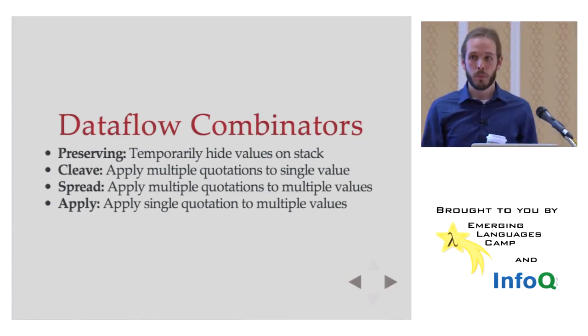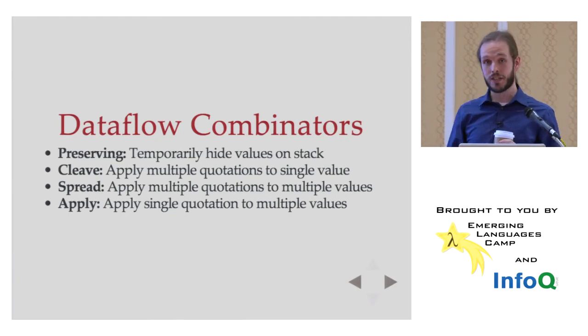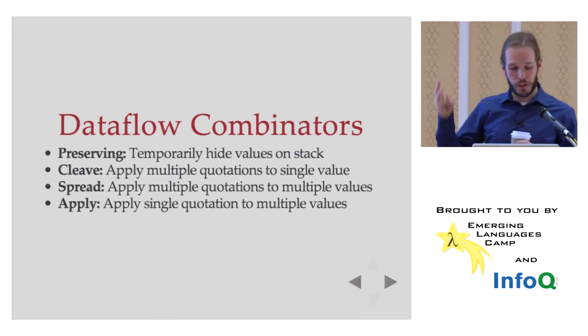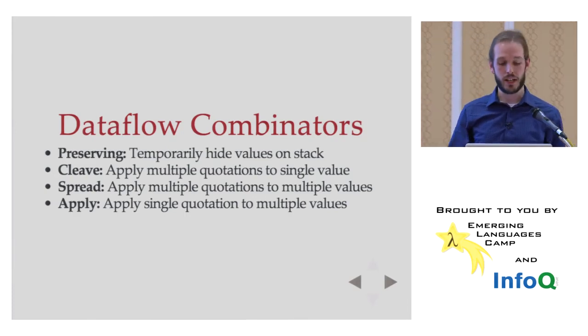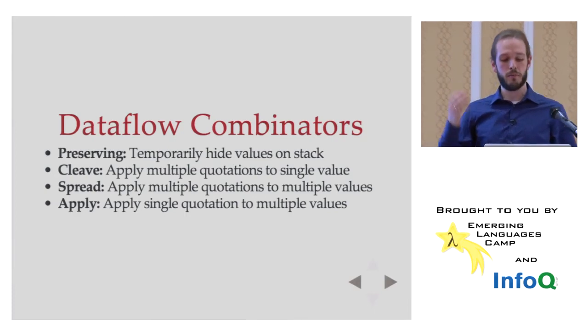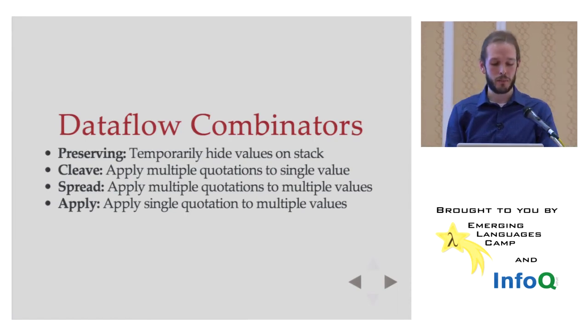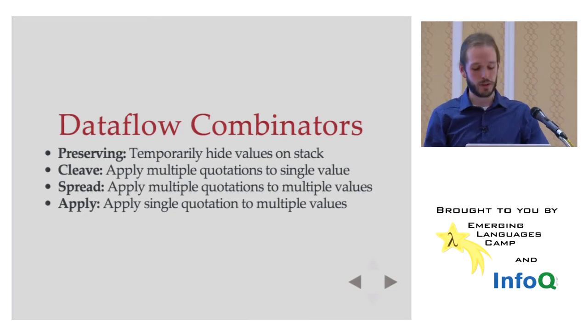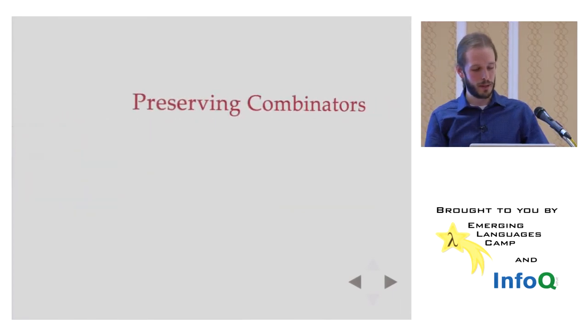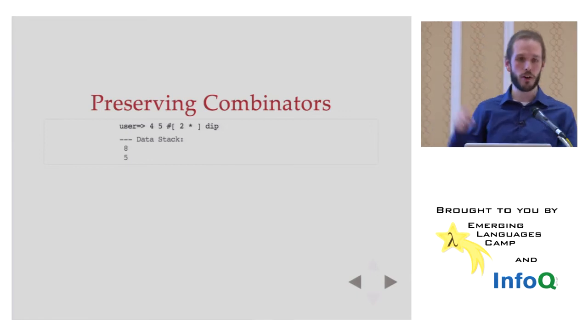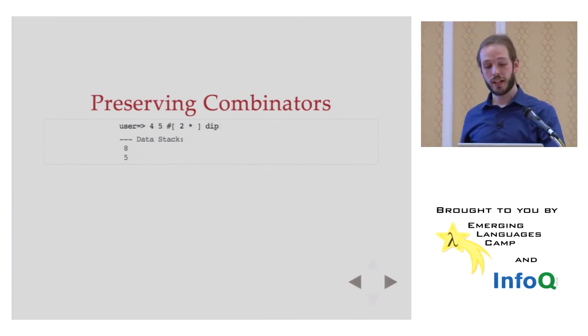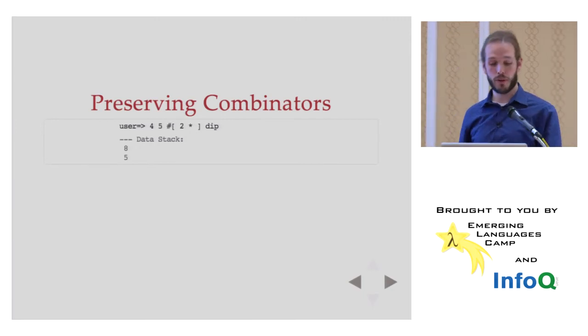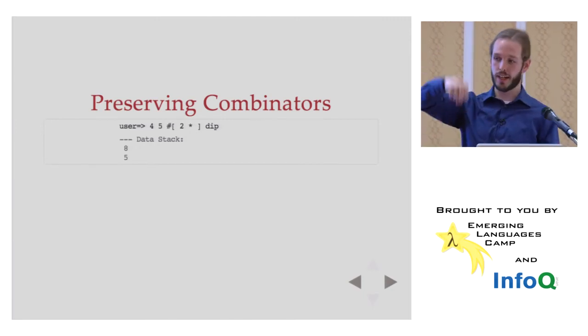And this is where the really interesting stuff comes in because now we're not worrying about like swap, dupe, dupe, dip, nip. It's I have code I want to run. I have a stack in this state. It needs to be in this state afterwards. How can I reason about in kind of an equational way what the stack looks like now and what I want it to be? So Factor defines four basic dataflow combinators. They are preserving, cleave, spread, and apply. Preserving is kind of the outlier. It temporarily hides values on the stack while you do other things. And the other three are ways of taking one or more quotations and one or more pieces of data and doing things with them in concert. So cleave takes multiple quotations, applies to a single value, spread multiple quotations to multiple values pairwise. They have the same number. And apply takes a single quotation and gives it multiple values.